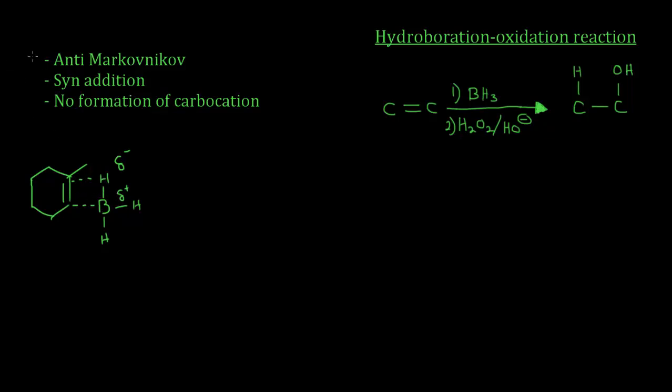These electrons over here actually go over there, and these electrons from this double bond actually go to this boron. So the product you get from this is this product.